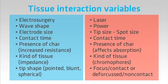With electrosurgery the collateral injury is deep in the tissue and hard to see. With the laser we see what is happening on the surface and use that information to guide us. With electrosurgery, charring and carbon increases impedance and slows down cutting. With the laser, charring and carbon absorb laser energy and they also slow down cutting.